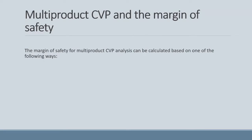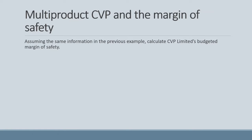Once we know how to calculate our breakeven point using Multiproduct CVP, we can calculate the margin of safety. There are three methods: first, using the total number of units produced — while this works it is not conceptually correct, as you can't add different products; second, using the batches produced; and finally, using the total sales revenue. The batch and revenue methods are conceptually correct as we are comparing like terms.